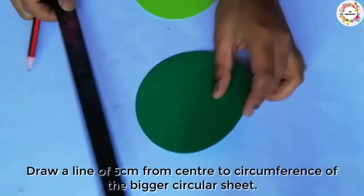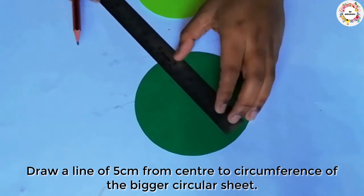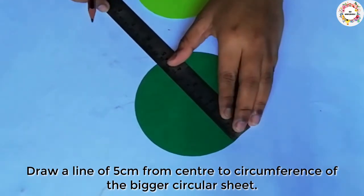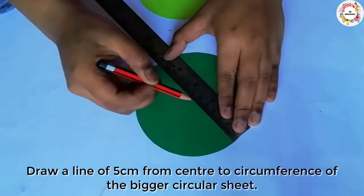Now we will draw a line on the large sheet. We will draw a line from the center to the edge of 5cm and cut it.